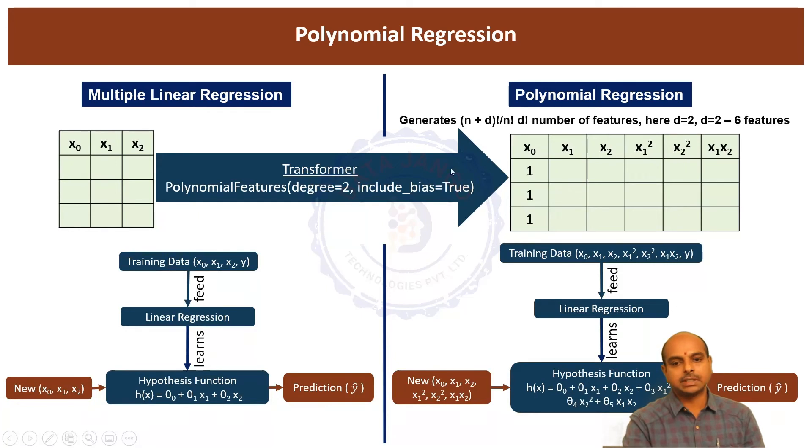If you look at this, it is 6 features, and it created 6 features: x0, x1, x2, x1 square, x2 square, and x1 x2. Because we said include bias is equal to true, what is bias term here? x0. If you say include bias term is equal to false, it is going to create 5 features only: n plus d factorial by n factorial into d factorial minus 1.